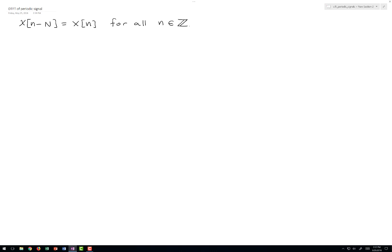What this statement says is that if we shift the signal to the right by N capital N samples, we'll get the same sequence back. We won't be able to tell the difference, and this has to be true for all integers little n.